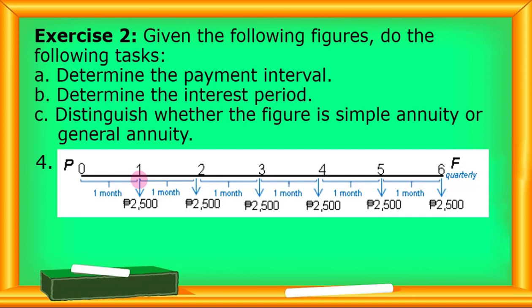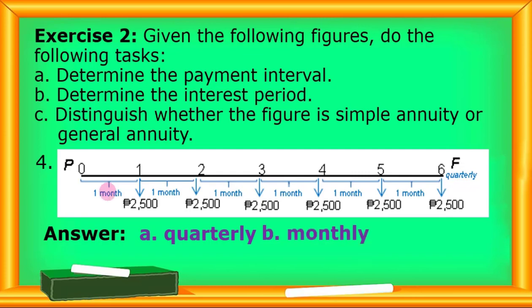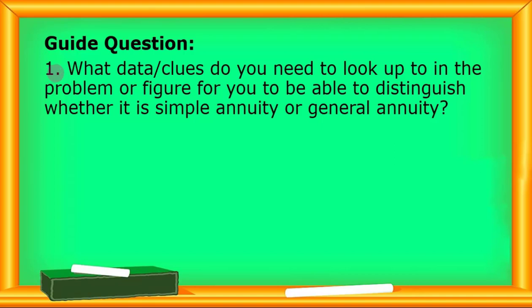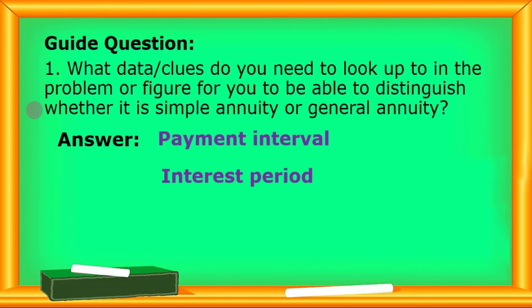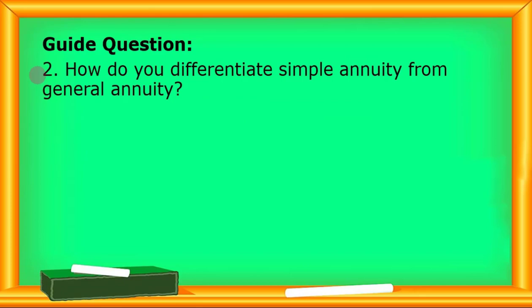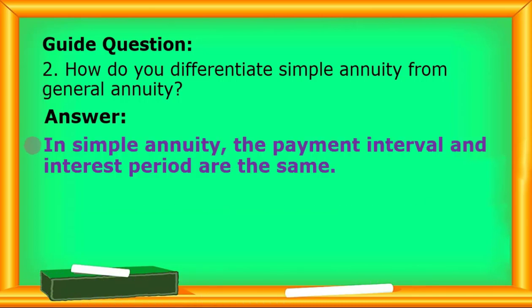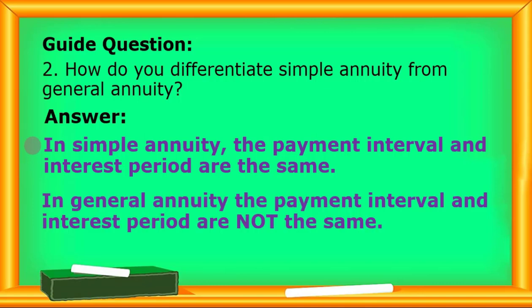For number four: the payment interval is quarterly — that's letter A — and the interest period, letter B, is monthly. So we have a general annuity. For the guide questions: number one — what data or clues do you need to look for to distinguish simple annuity from general annuity? Possible answers: payment interval and interest period. Number two — how do you differentiate simple annuity from general annuity? In simple annuity, the payment interval and interest period are the same. In general annuity, the payment interval and interest period are not the same.